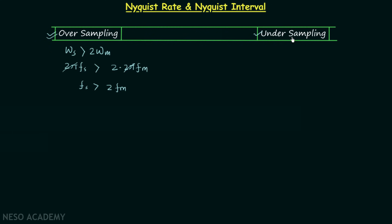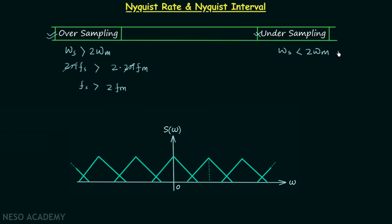In the case of undersampling, ΩS is less than twice of ΩM. Undersampling is not allowed because in this case there is overlapping between the shifted spectrums of the message signal. Therefore when we try to recover the message signal from the sampled signal it won't be possible. This case is not allowed, giving us Fs < 2·Fm.